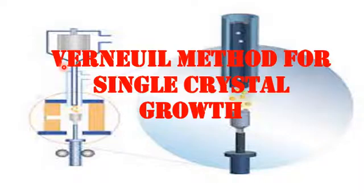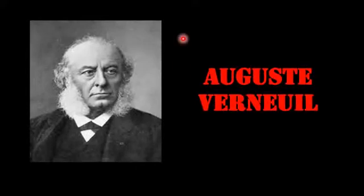The Vernell method is the first method introduced by chemists to grow gemstones, because they were precious kinds of stones and they synthetically produced those precious stones using this method. Going to the history of this method — in 1883, Vernell developed this method to produce different types of gemstones like ruby, sapphire, and corundum.